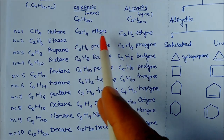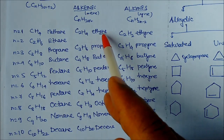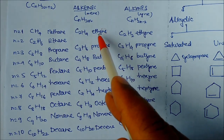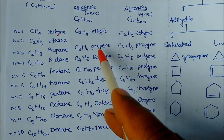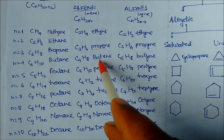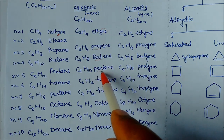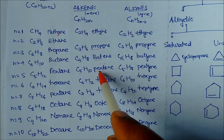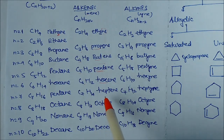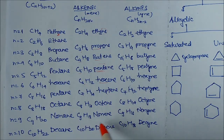For alkyne, starting from C2, the suffix '-yne' is used instead of '-ane'. So C2 is ethyne, C3 is propyne, C4 is butyne, and C5 is pentyne. These are the word roots for the main carbon chain: 5 carbons is 'pent', 6 is 'hex', 7 is 'hept', 8 is 'oct', C9 is 'non', and C10 is 'dec'.